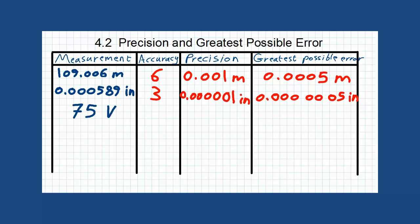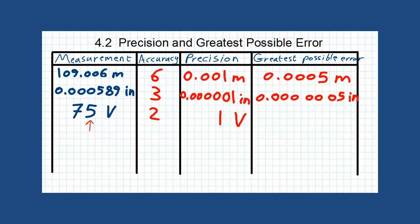In example 3, the accuracy is 2. The last number counted is changed to 1, and the number before it is 0, so there is no need to write it — the precision is simply 1 volt. Divide it by 2 and you will have one half as the greatest possible error.